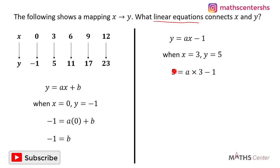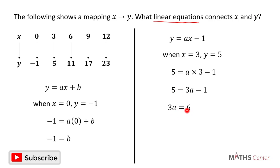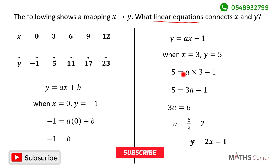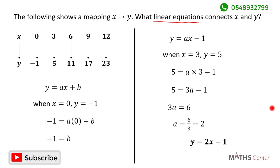Substituting gives us five is equal to a times three minus one, which is three a minus one. So five is equal to three a minus one. Grouping like terms gives us three a equals six. Dividing both sides by three gives a equals two. Replacing a with two, the equation is y is equal to two x minus one. That is the linear equation that connects x and y.